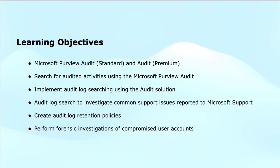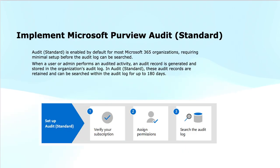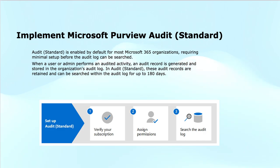Audit standard is enabled by default for Microsoft 365 organizations. As a result, there are only a few things an organization must do before it can search the audit logs, and this includes setting up the audit standard, verifying your subscription, assigning the required permissions, and searching the audit logs. When an audited activity is performed by a user or administrator, an audit record is generated and stored in the audit log for the organization.